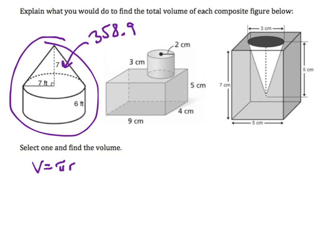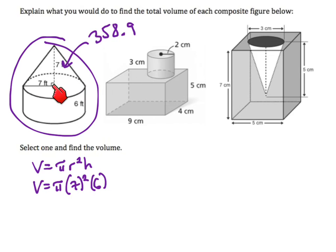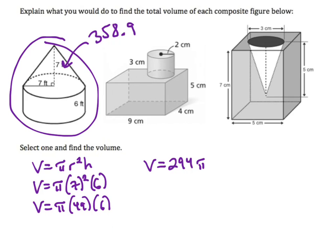Now the volume of the cylinder: volume equals π r² times height. Plugging in, the radius is 7 and the height is 6 — remember, if you had a diameter and not a radius, you would have to divide by 2. So 7² is 49, giving volume equals π times 49 times 6. Figuring out 49 times 6, volume equals 294π. Volume is about 294 times 3.14, so volume is about 923.16.